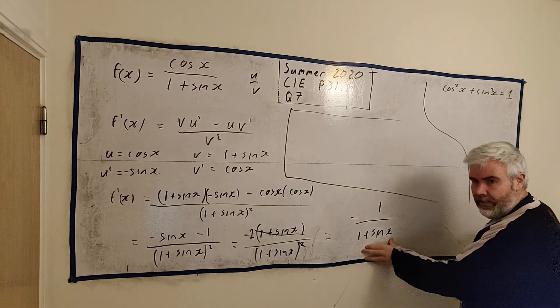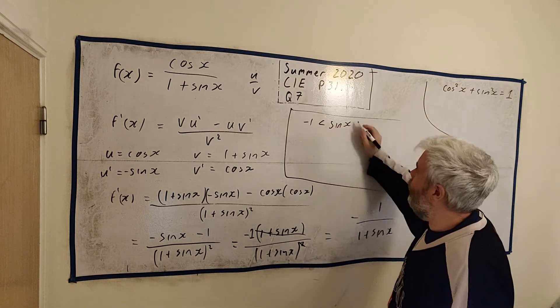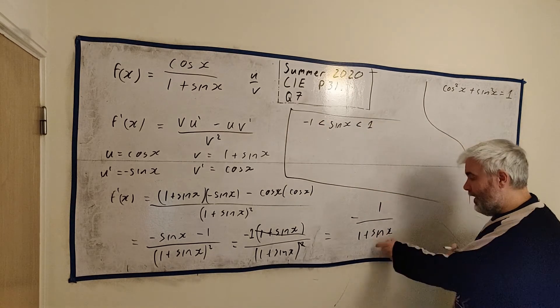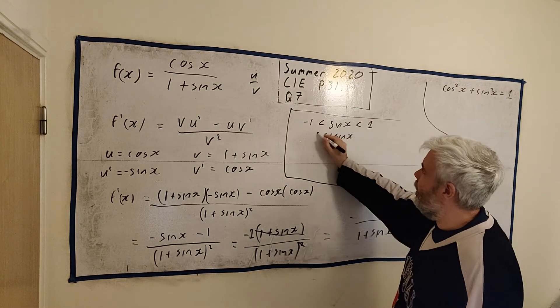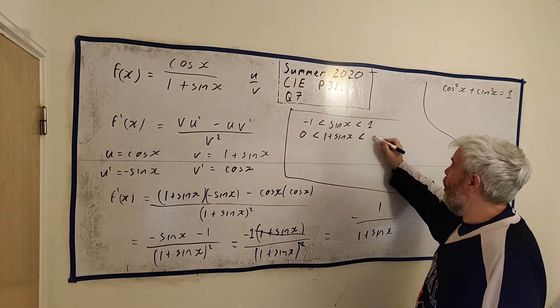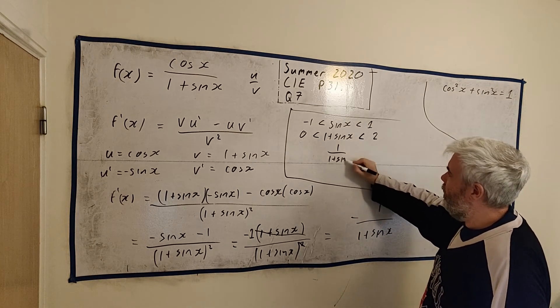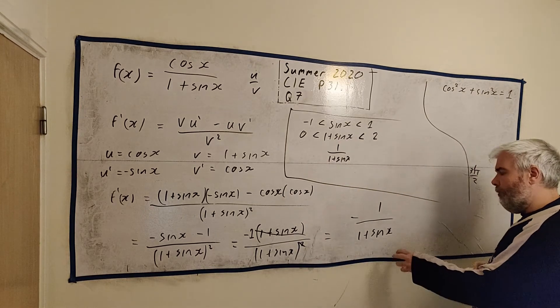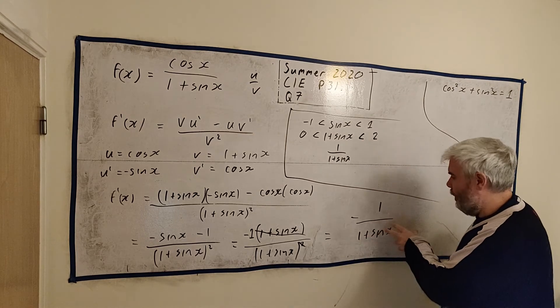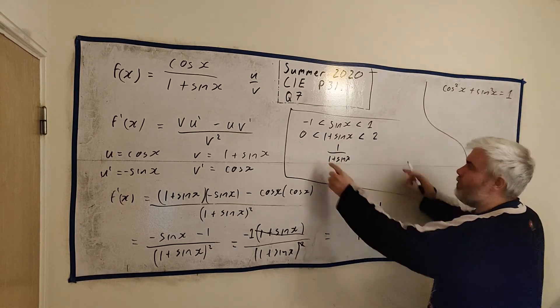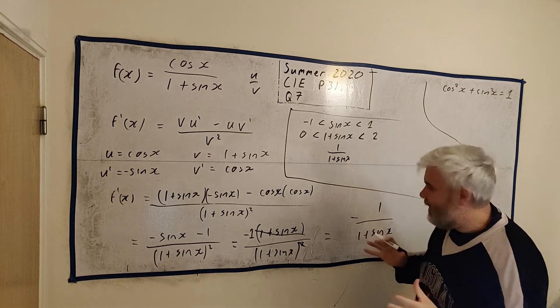There's two of them on the bottom row. So we just cancel that into one of them. And our very final answer is -1 over (1 + sin(x)). They wanted us to show that it's less than 0. We need to look at this and think of what we understand. I understand sin(x) a lot. sin(x) is always bigger than -1 and less than 1.